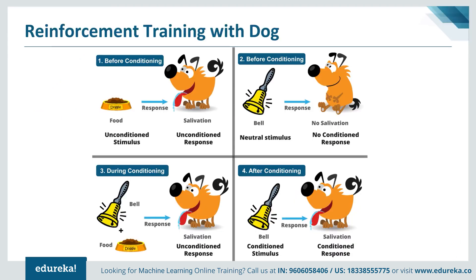Before seeing use cases, let's see how Pavlov trained his dog using reinforcement learning. Pavlov's learning had four stages: initially he gave meat to his dog and the dog salivated in response. Next he created a sound with a bell — the dog did not respond. Then he conditioned the dog by ringing the bell and then giving food — seeing the food, the dog salivated. Eventually the dog started salivating just after hearing the bell, even if food was not given, as the dog was reinforced that whenever the master rings the bell, food will come.